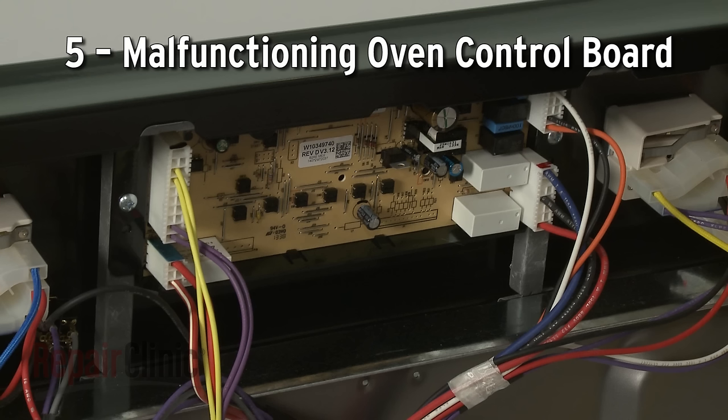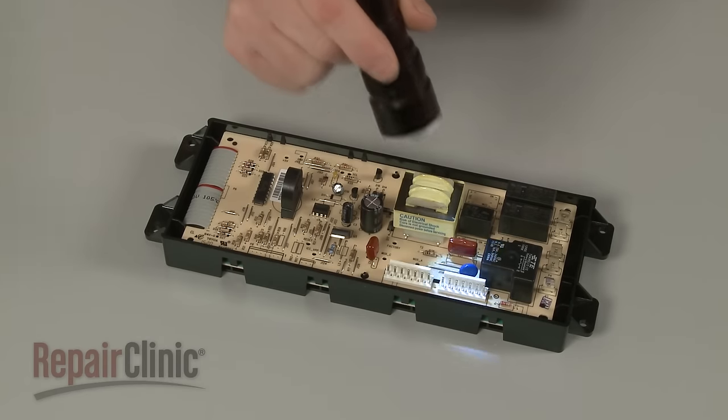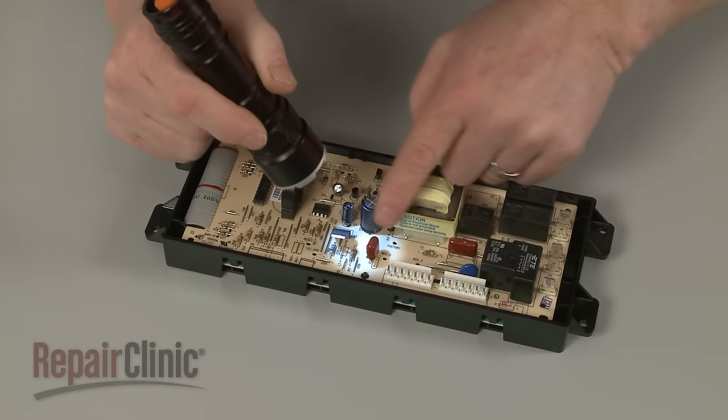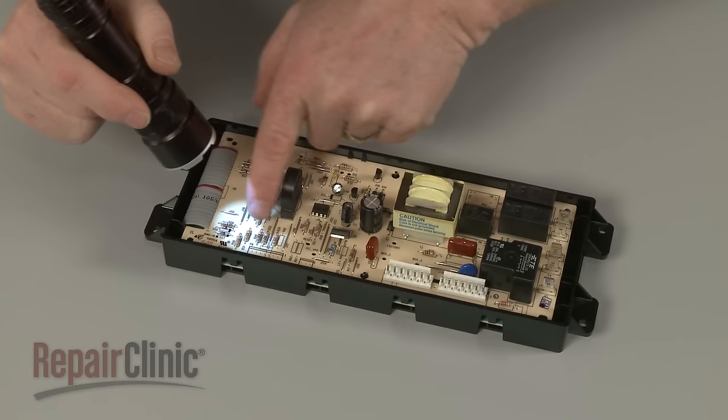If the sensor shows accurate resistance when tested, the oven control board itself could be malfunctioning. While the board cannot be easily tested, you can inspect it for signs of burning or a shorted-out component.